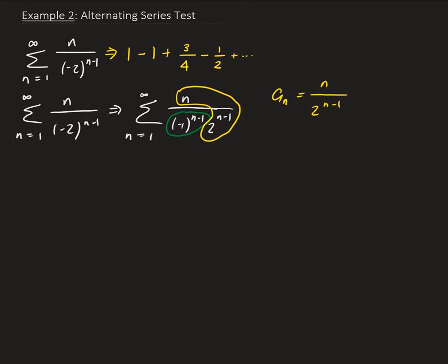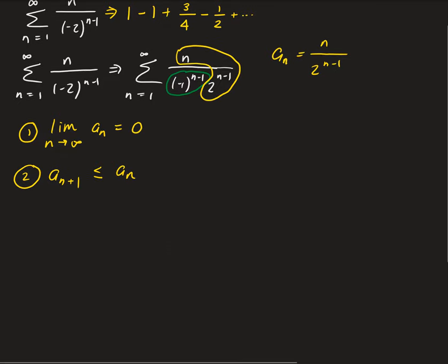Now we need to apply the alternating series test. There are two conditions that we have to check for. The first condition is that the limit of the nth term as n approaches infinity goes to 0. The second condition is that the n plus 1 term has to be less than or equal to the nth term. So let's first take the limit of the nth term as n goes to infinity.